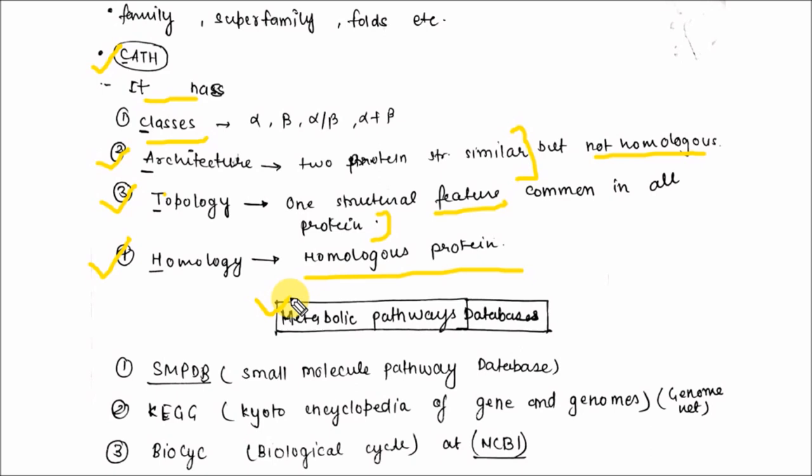Metabolic pathway databases include SMPDB (Small Molecular Pathway Database), KEGG (Kyoto Encyclopedia of Genes and Genomes), and BioCyc (Biological Cycle) at NCBI.